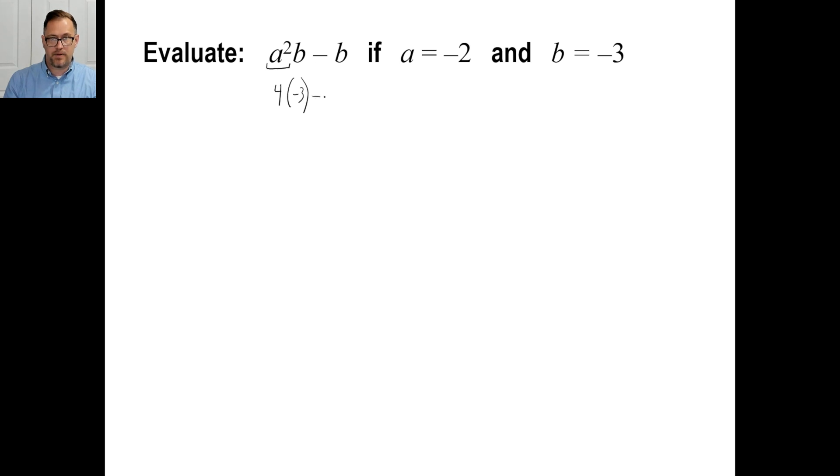So, order of operations means you do this first, right? 4 times negative 3. Negative 12. You can put what is the opposite of negative 3. And the answer is 3. Negative 12 plus 3. Don't forget. Two opposite numbers. You take the absolute values and you subtract them. 12 minus 3 is 9. What is it? Negative 9 or positive 9? The answer is negative 9. Because this is the number with the higher absolute value. So, there you go.